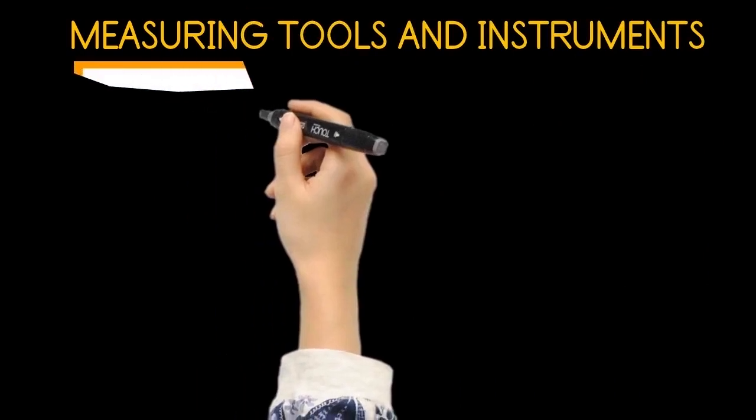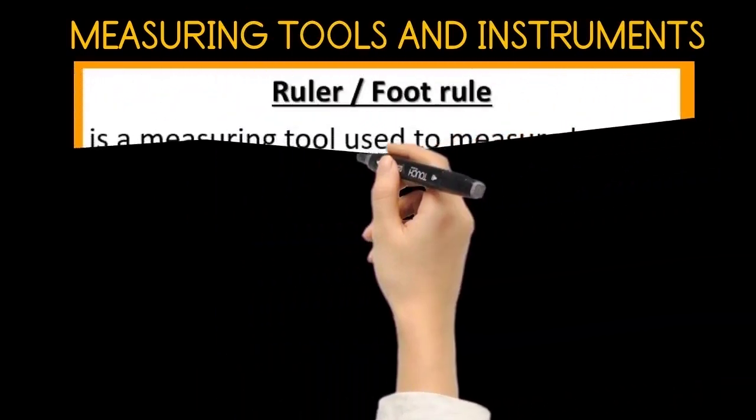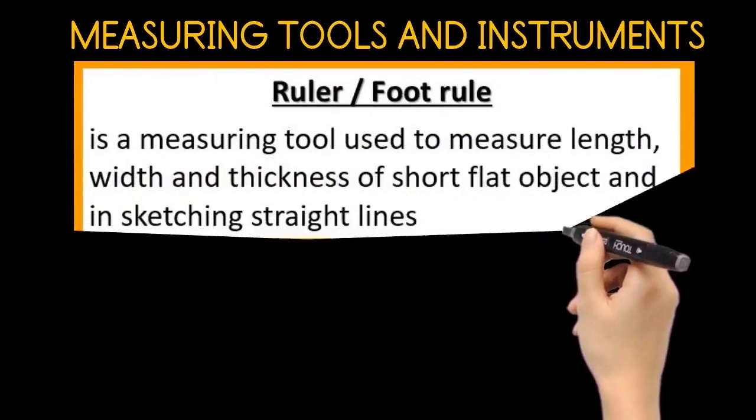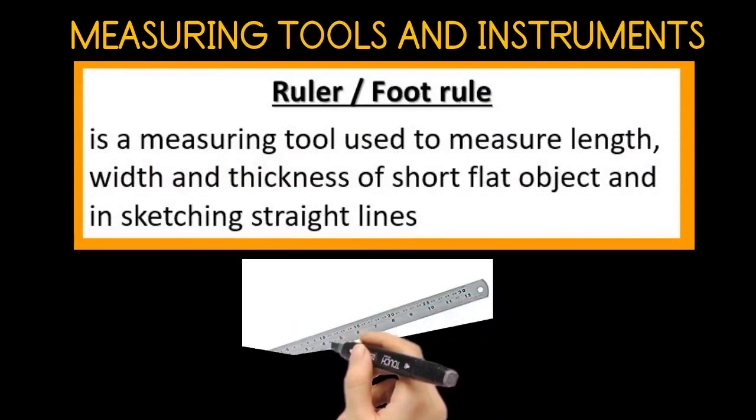The ruler or foot rule. The ruler is a measuring tool used to measure length, width, and thickness of short, flat objects, and in sketching straight lines.